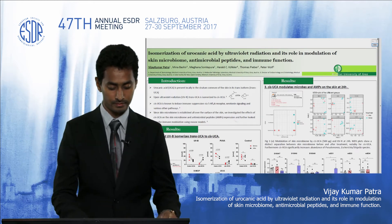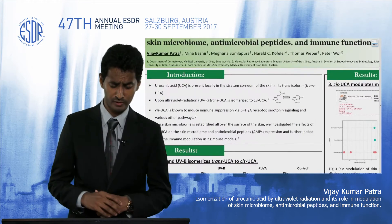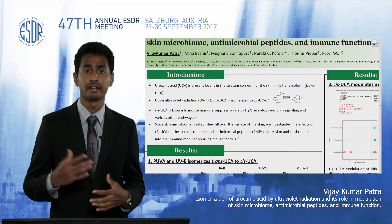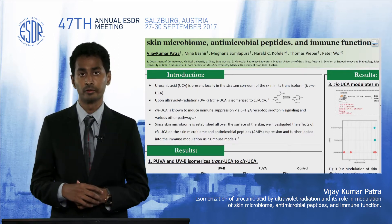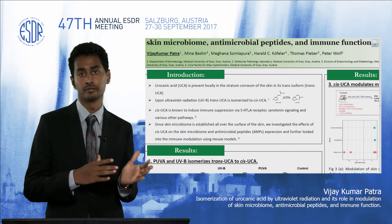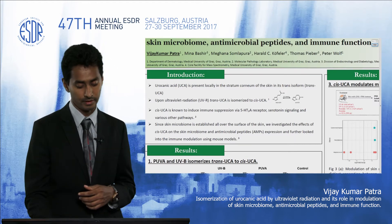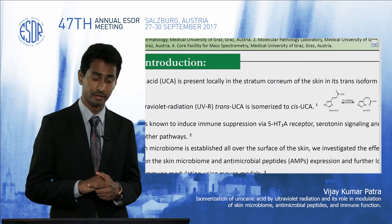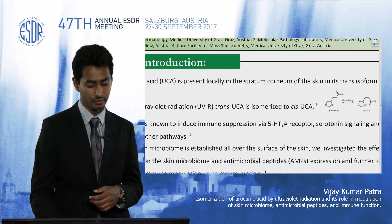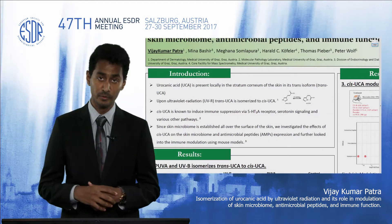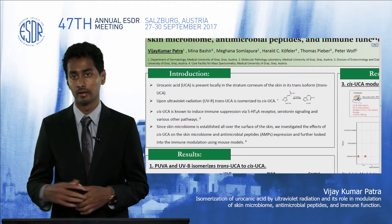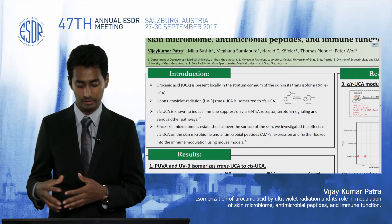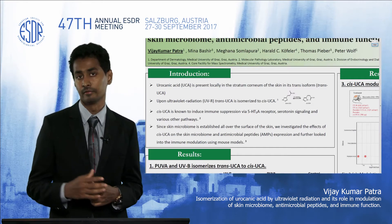In the introduction: urocanic acid is present locally in the stratum corneum in its trans isoform, and upon UV radiation trans-UCA is isomerized to cis-UCA. Previous studies have indicated that urocanic acid is known to induce immune suppression via factors such as the 5-HT2A receptor, serotonin signaling, and various other pathways.